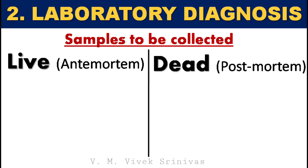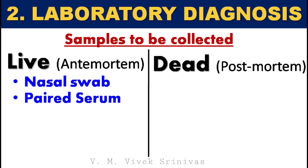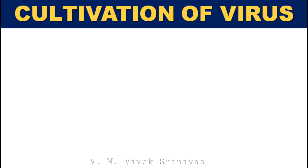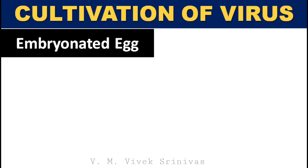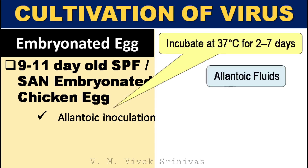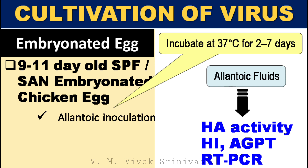Laboratory diagnosis: Nasal swab and paired serum are collected from live animals; lung tissues are collected from dead animals. Samples are sent for diagnosis at HSADL, ICAR, IVRI — the High Security Animal Disease Laboratory at Bhopal. This virus can be cultivated or isolated in the lab by three ways. First, embryonated egg inoculation using 9 to 11 days old specific pathogen-free or specific antibody-negative embryonated chicken eggs, using the allantoic route. Allantoic fluids are collected and confirmed for influenza virus by hemagglutination test, hemagglutination inhibition test, agar gel precipitation test, and reverse transcriptase PCR.